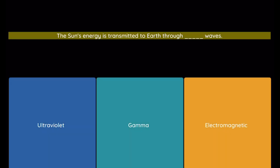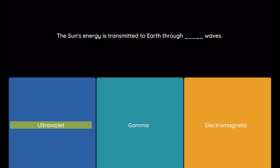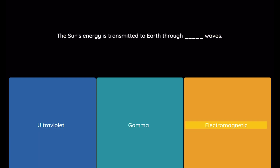Question: The sun's energy is transmitted to Earth through blank waves. Option 1: ultraviolet. Option 2: gamma. Option 3: electromagnetic.